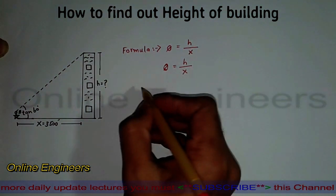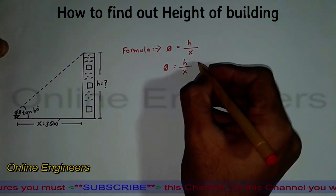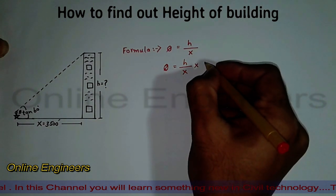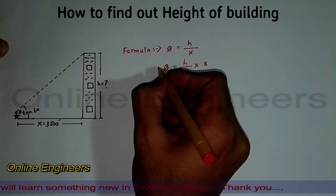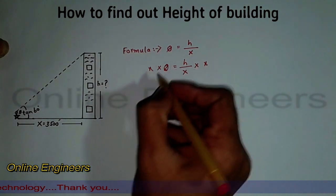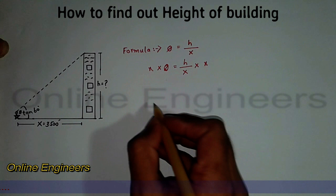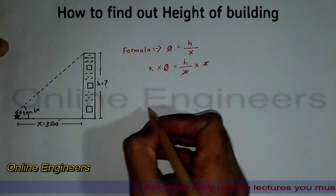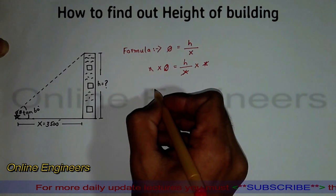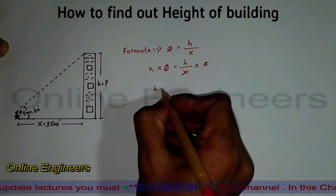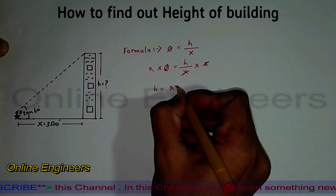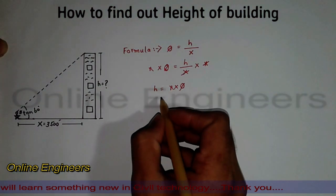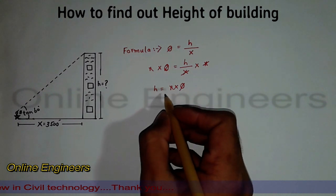Simply, we can find H from this formula. Multiply both sides by X, so the X's cancel, and we have H = X × tan θ. Now put the values into this formula.